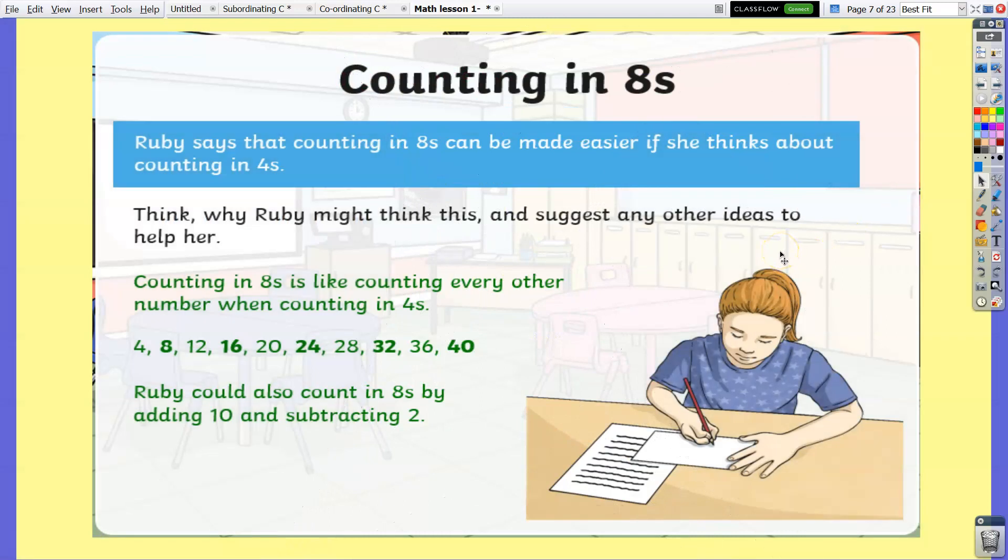Counting in 8s. Ruby says that counting in 8s can be made easier if she thinks about counting in 4s. Counting in 8s is like counting every other number when counting in 4s. You could just double the number: 4 doubled is 8, double 8 makes 16, double 16 is 32, double 24 is 48.